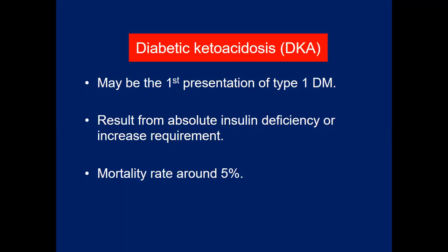DKA occurs mainly in type 1 diabetic patients but is not uncommon in some patients with type 2 diabetes. It is a state of absolute or relative insulin deficiency aggravated by hyperglycemia, dehydration, and acidosis producing derangements in metabolism. The mortality rate is about five percent if it is not properly handled or treated timely.